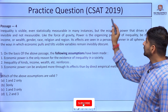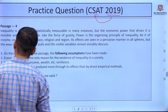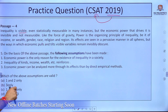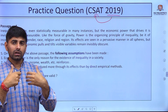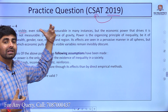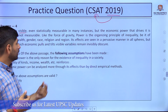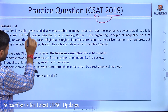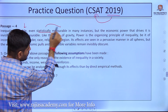This is from the 2019 CSAT previous year paper. It says: inequality is visible — it's based on inequality and its factors. They have mentioned the factors of inequality. Inequality is visible, even statistically measurable in many instances.